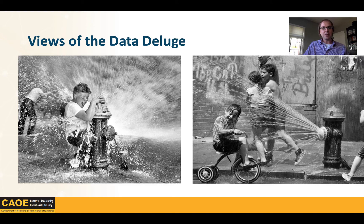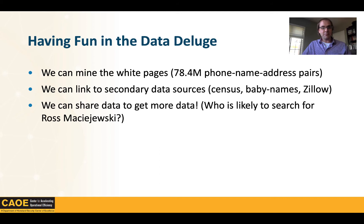One data set people may not think about is the white pages. The US white pages have 778.4 million phone-name-address pairs. From the telephone book I get your first name, last name, and address. From your address I can link to Zillow to guess how much your house is worth, and link to census data to guess gender and age. If I make an interface where people explore maps of this data, who's more likely to explore a map of Ross Majewski? Probably somebody with the last name Majewski.